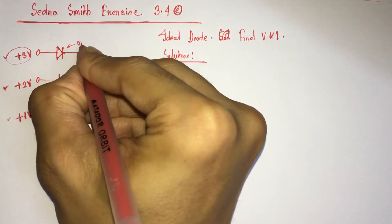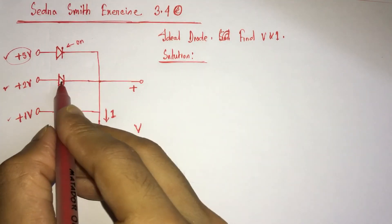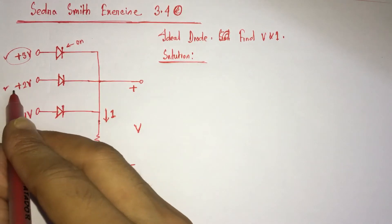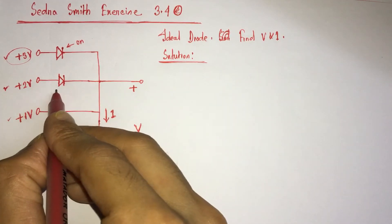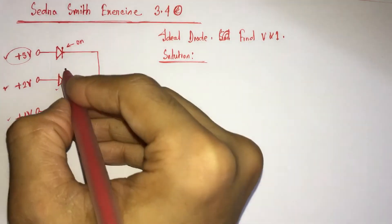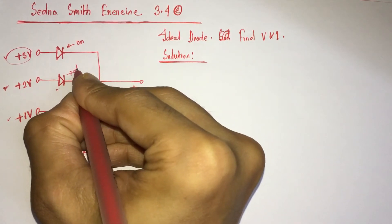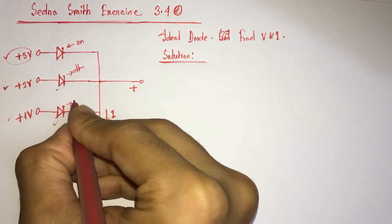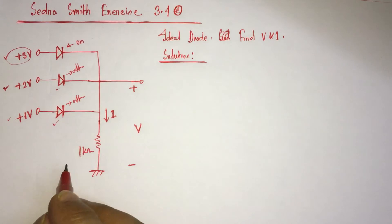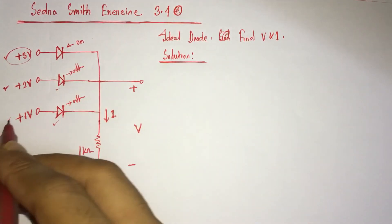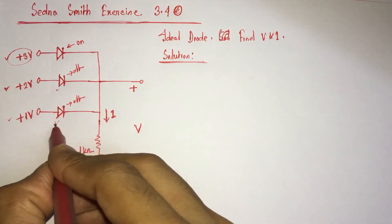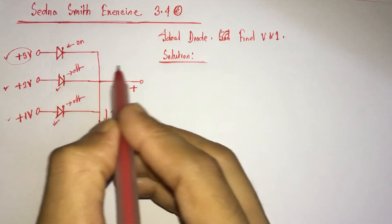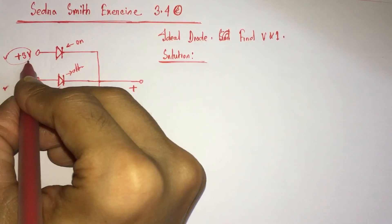So this diode is ON and both other diodes, the diode with 2 volt and diode with 1 volt, will be OFF. So I have found that this diode is not conducting, this diode is not conducting, only the diode with plus 3 volt.